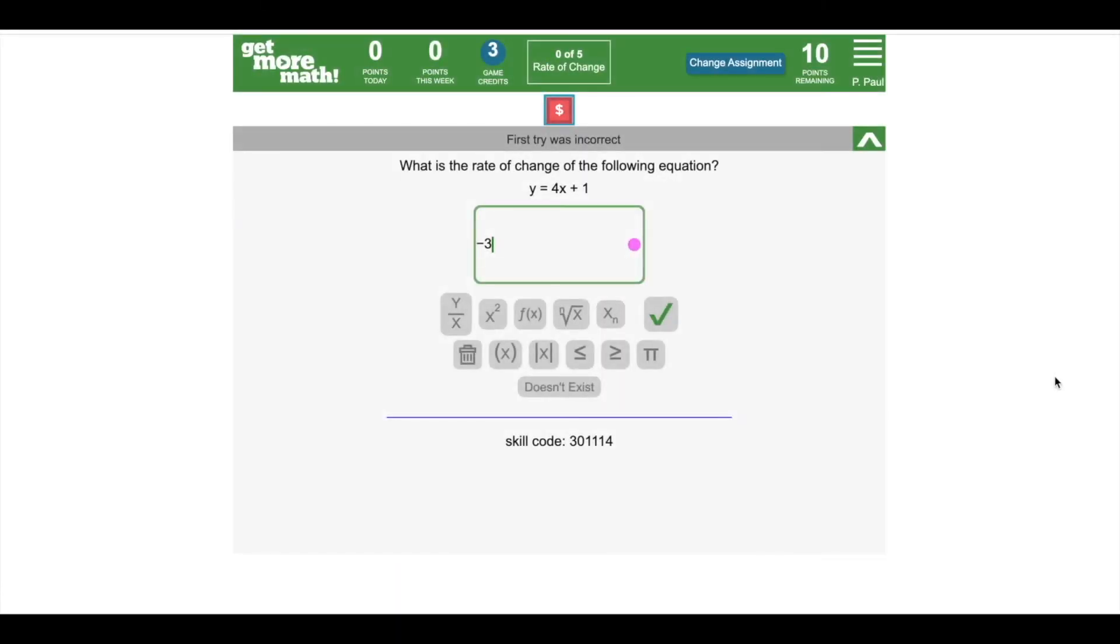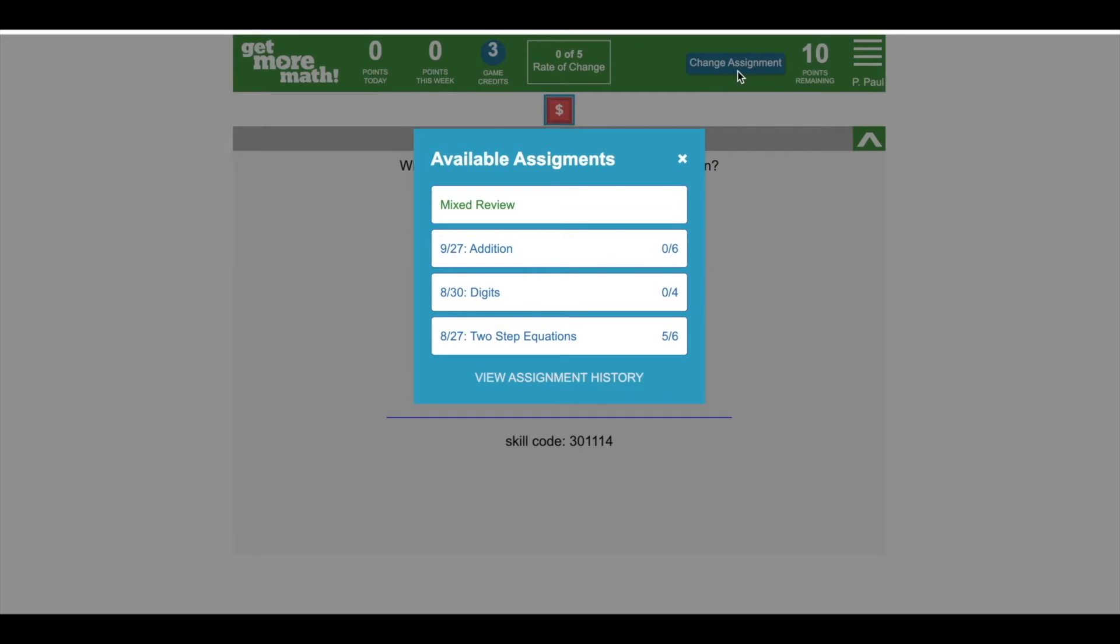Now, what can you do if you get stuck on a problem and your teacher is not available to offer assistance? The Change Assignment button in the upper right corner will allow you to switch to another assignment or Mixed Review where you can continue to work on problems to earn the points you need.